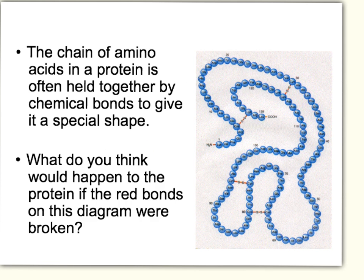Some proteins have special shapes and their shape is really important for the job they do. Chemical bonding holds that shape together — the chain of amino acids is folded into a particular pattern with bonds holding it together in specific places. If those bonds were broken, the protein would unravel back into a single string not in the correct shape, and if it's not in the correct shape it won't be able to carry out its job. This is a massive problem for enzymes because this can happen to them.